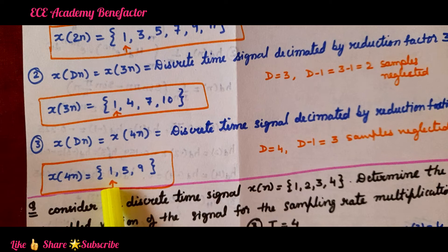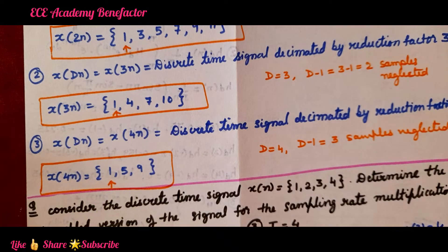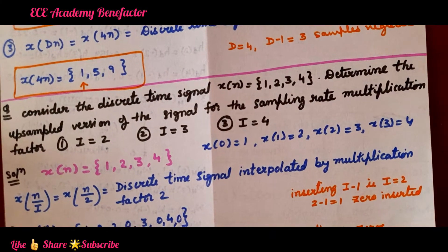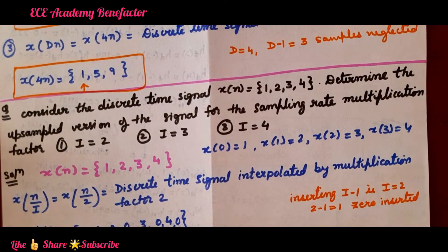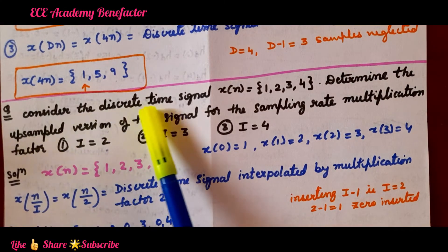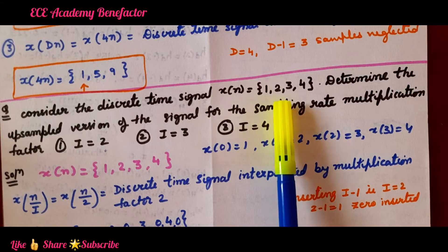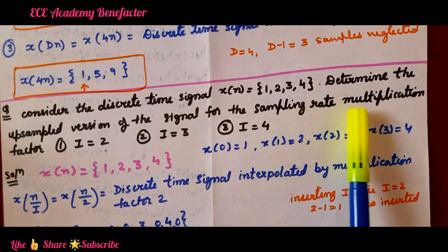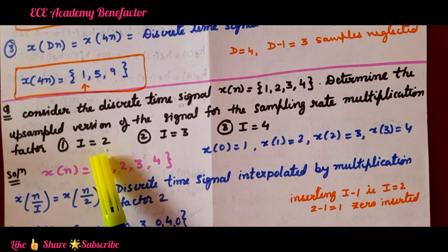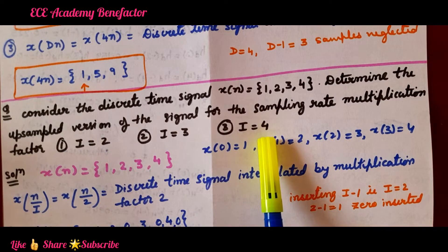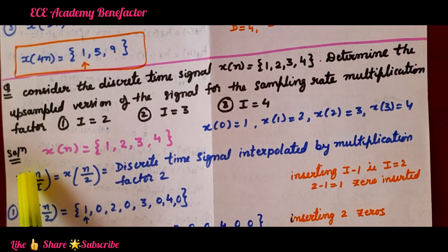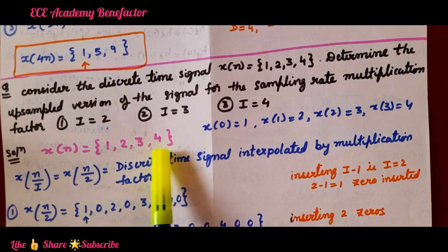The arrow indicates the sequence starts at n equal to 0. In downsampling, we neglect D minus 1 samples. Now, the next part of the class is upsampling. We need to find the upsampled signal. The question is: consider the discrete time signal x(n) = {1, 2, 3, 4}. Determine the upsampled version for multiplication factor I equal to 2, I equal to 3, and I equal to 4.